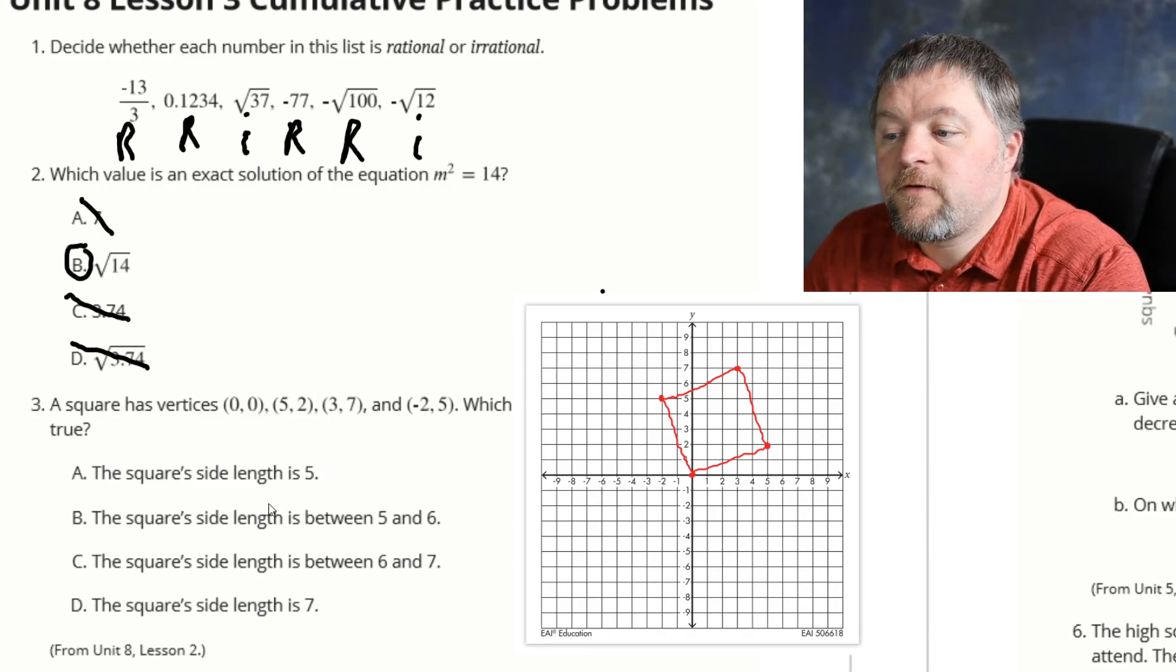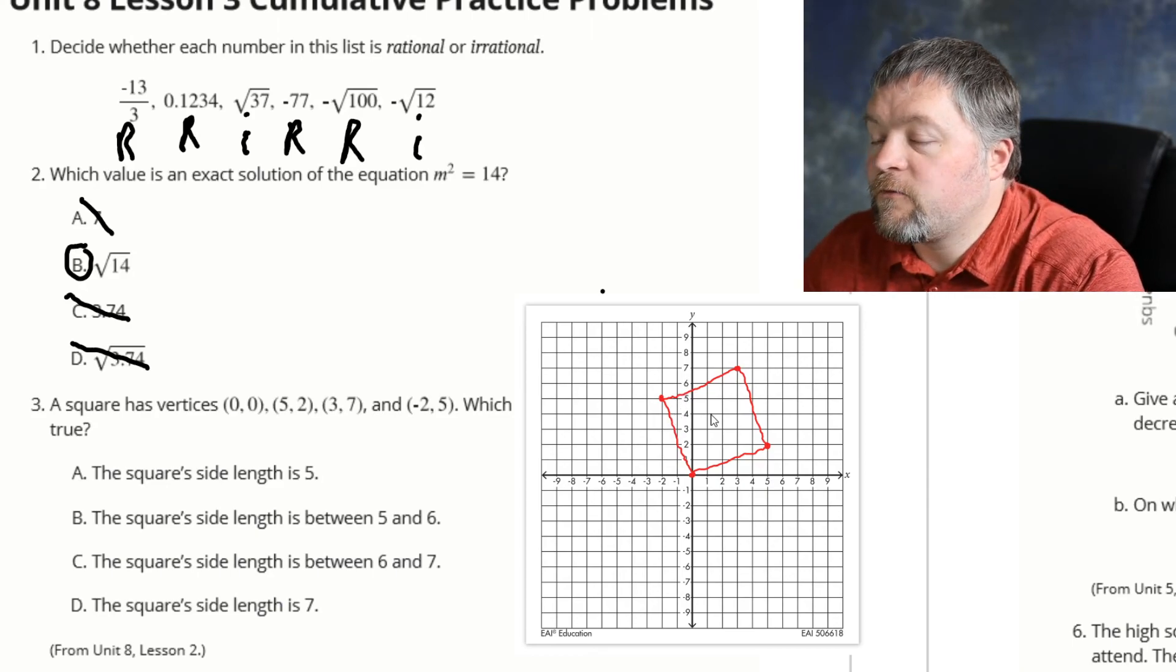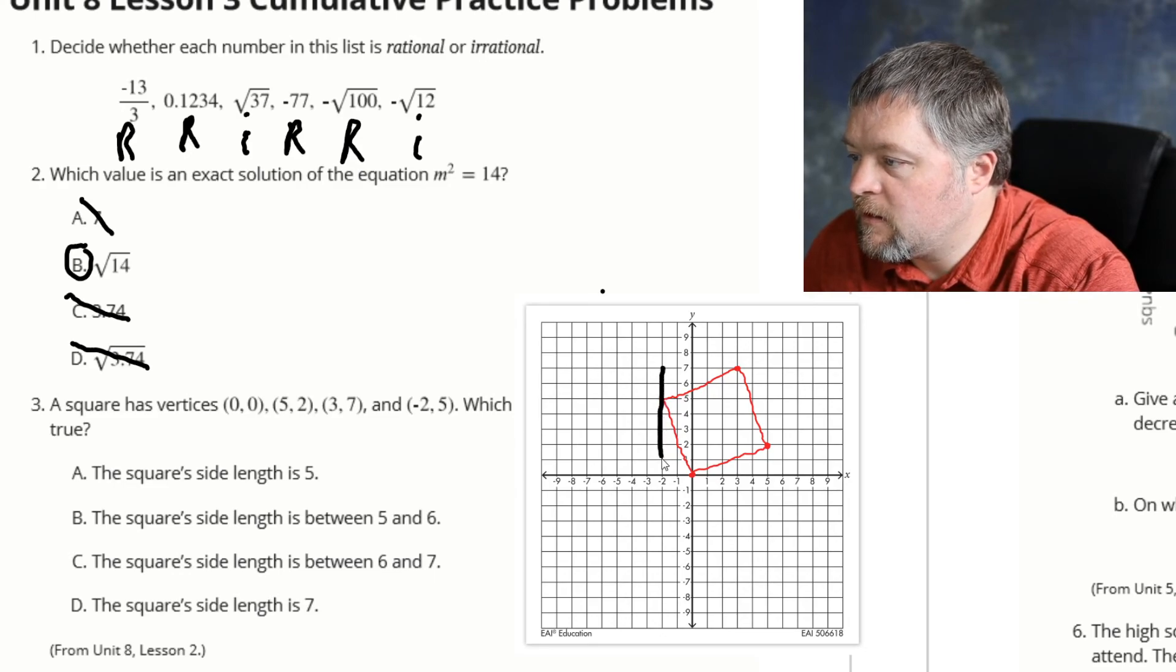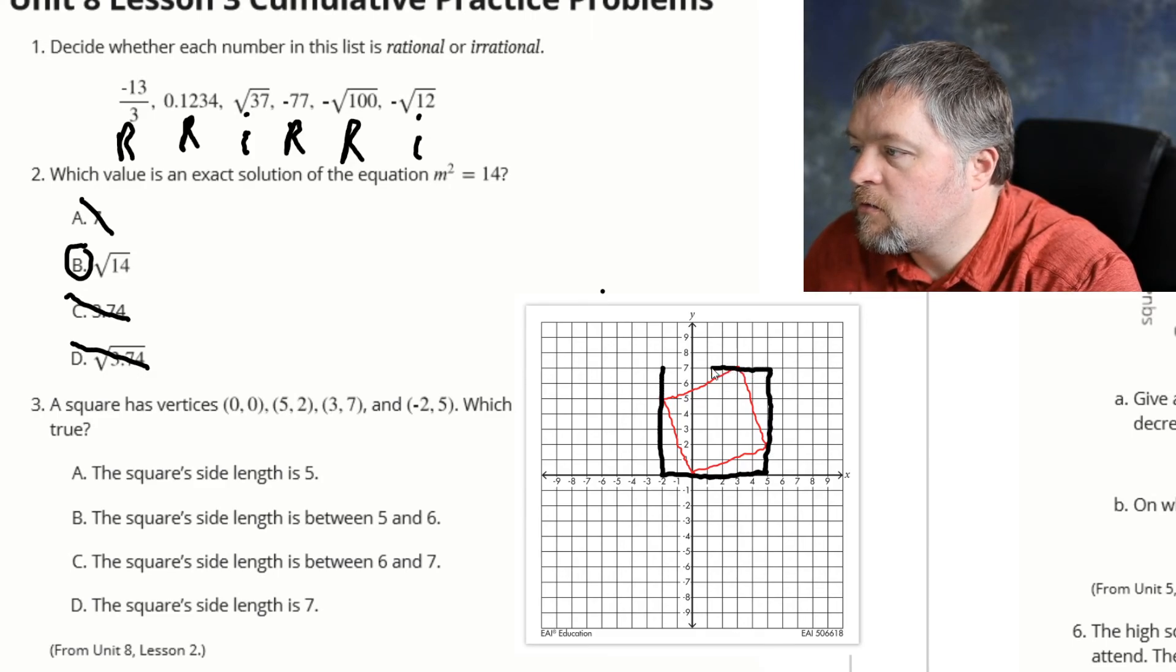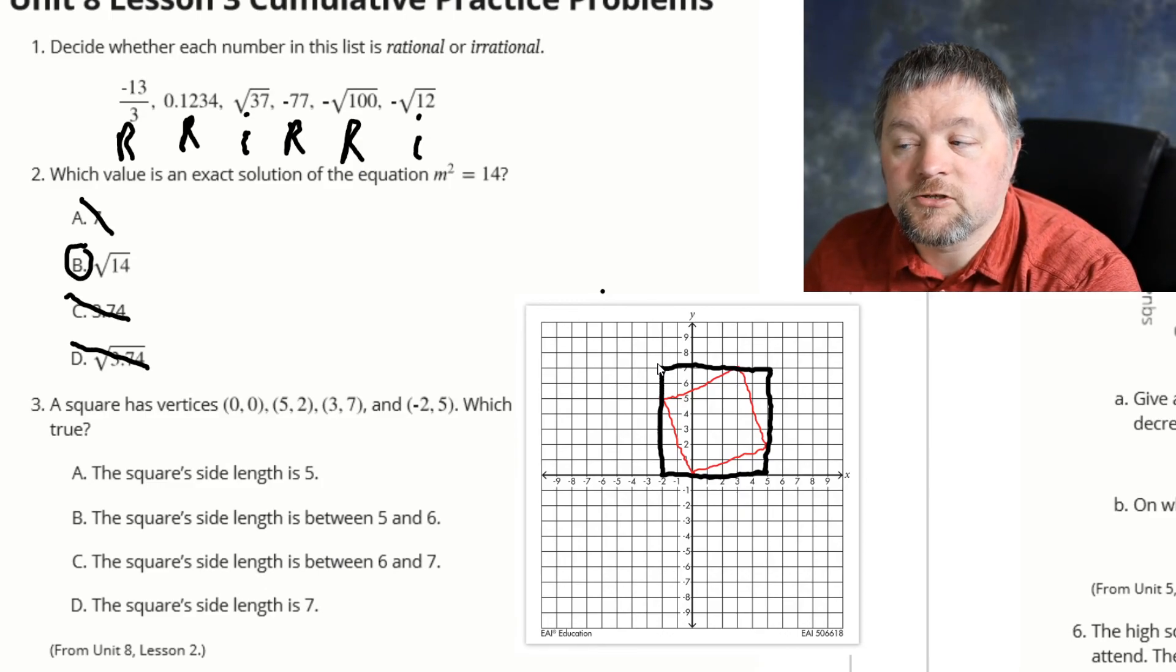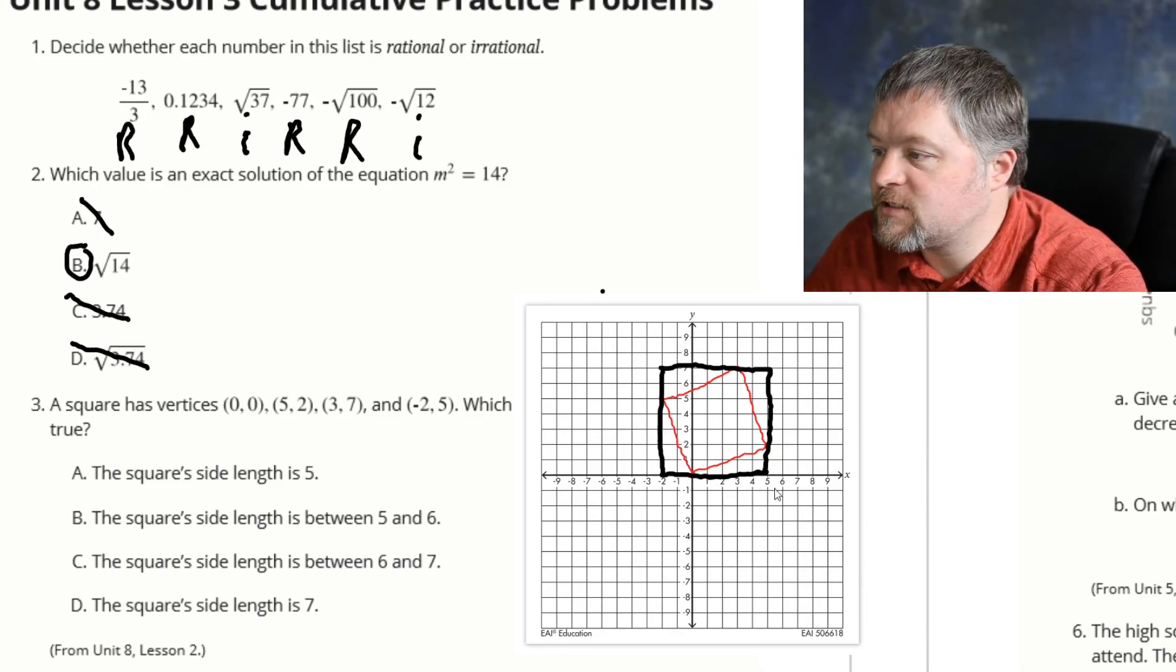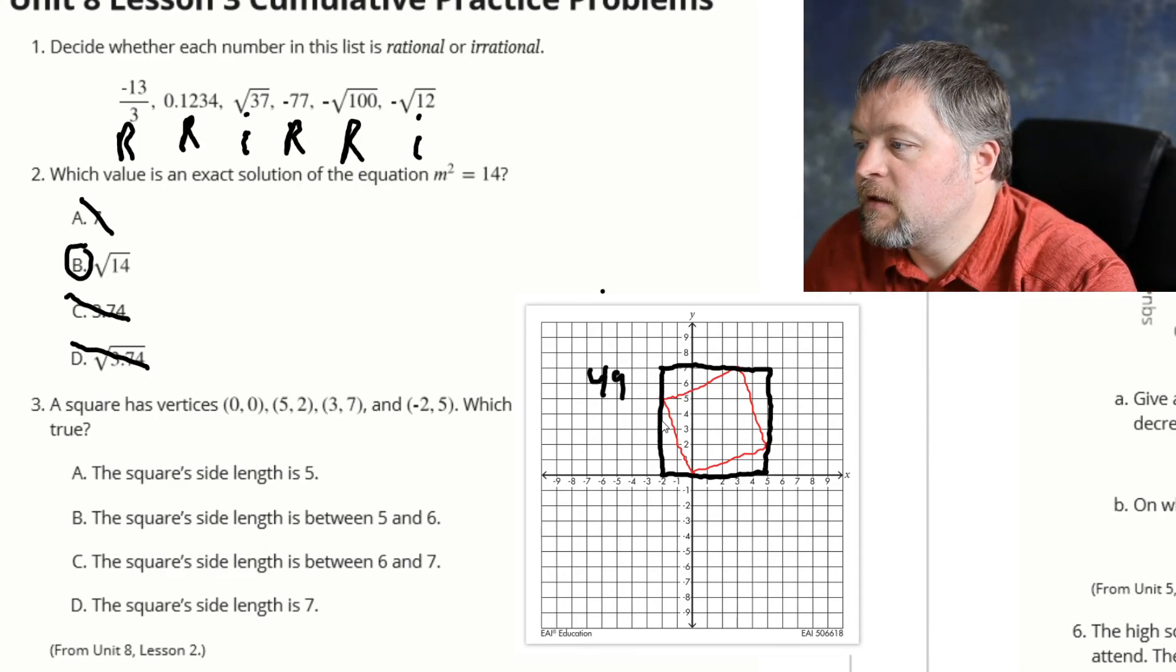Here I plotted those 4 vertices and drew a square. How are we going to find out the side length of this square? Well, first, let's find the area. To find the area, we can do what we've done before and enclose the square inside a larger square. The area of this larger square, which is 7 by 7, is 49 square units.